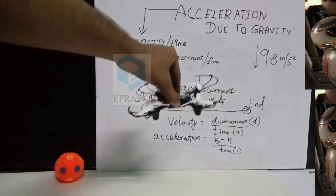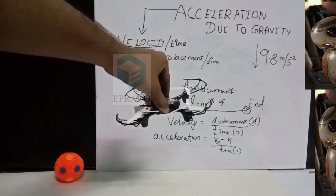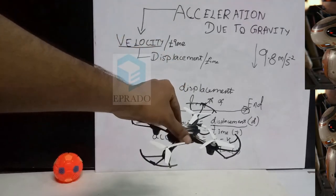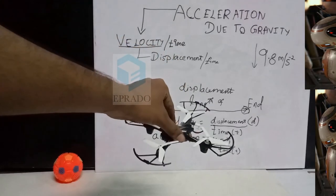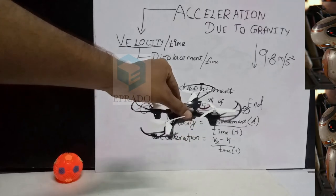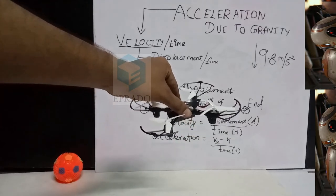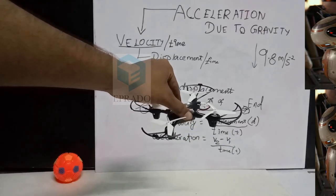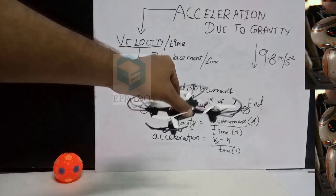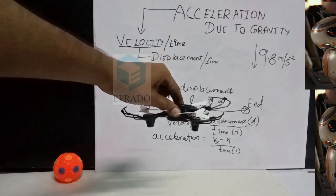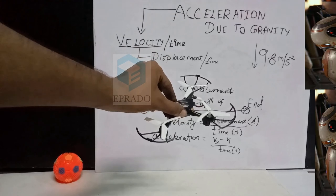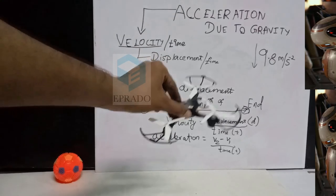It is called acceleration due to gravity. In the next session, we will learn how to make a drone hold its altitude and maintain a stable position in air against the acceleration due to gravity.